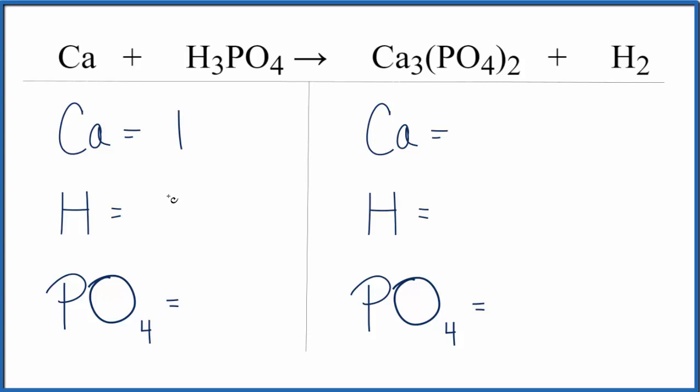We have one calcium, three hydrogens, and then I have a PO4 here. And then over here I have the PO4, it's the phosphate ion as well. So I could just say I have one PO4,